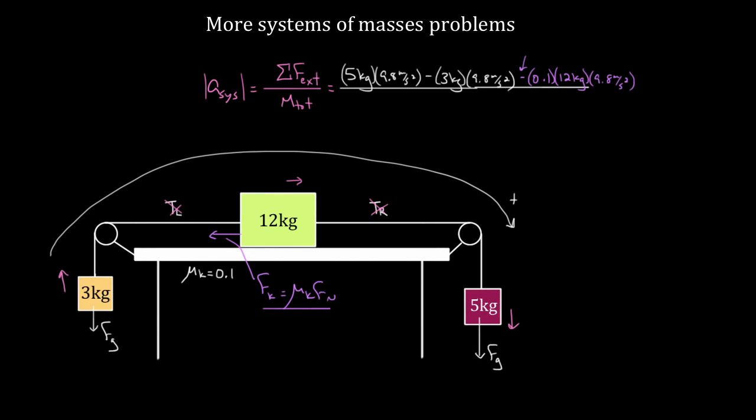And then I divide by the total mass, and my total mass is gonna be three plus 12 plus five is gonna be 20 kilograms. And now I can just solve. If I solve this, I'll get that the acceleration of the system is gonna be 0.392 meters per second squared.